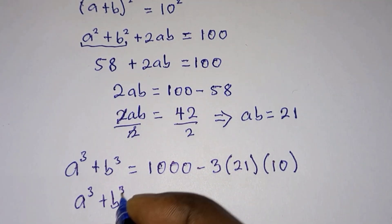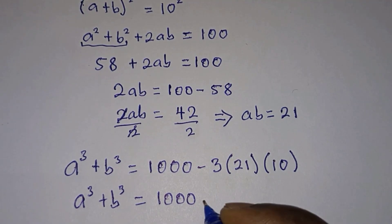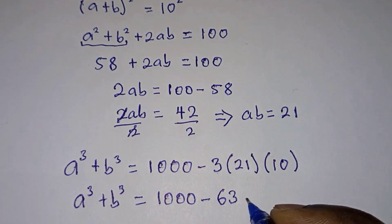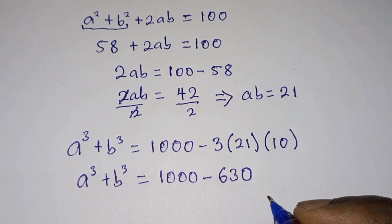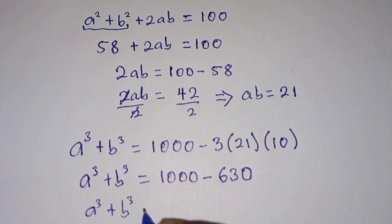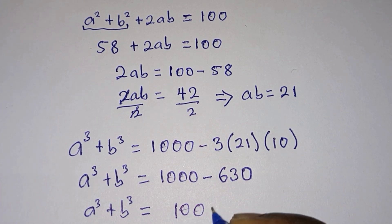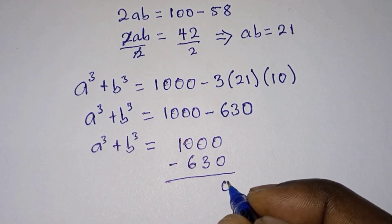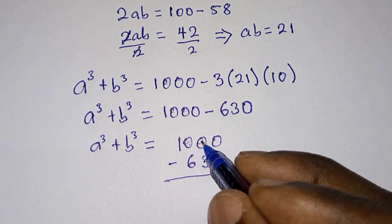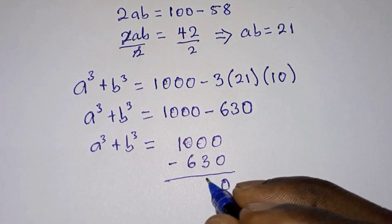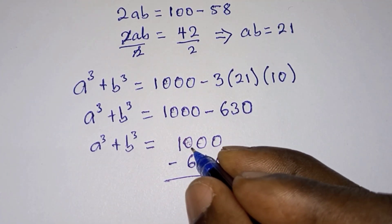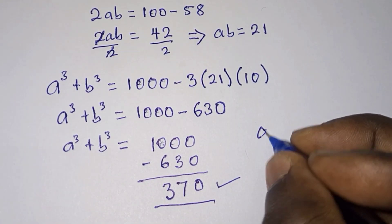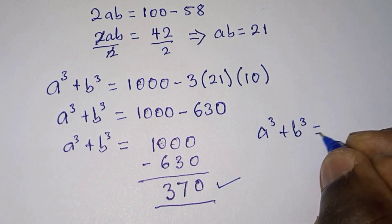Now let's simplify. We have 1000 minus 3 times 21: 3 times 1 is 3, 3 times 2 is 6, giving us 63, then times 10 that is 630. So we have 1000 minus 630. Solving manually: 10 minus 0 is 0, 10 minus 3 is 7, 9 minus 6 is 3. So the answer is 370. Therefore a cubed plus b cubed equals 370.